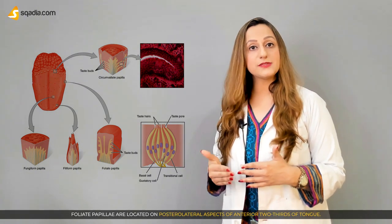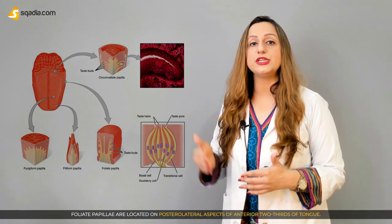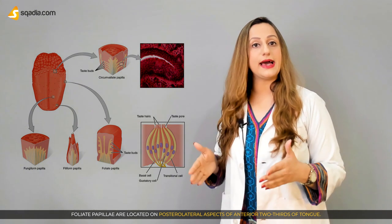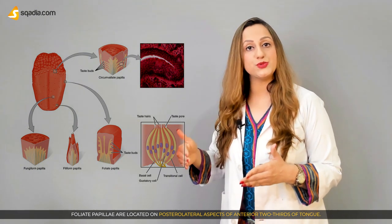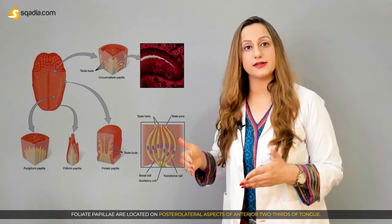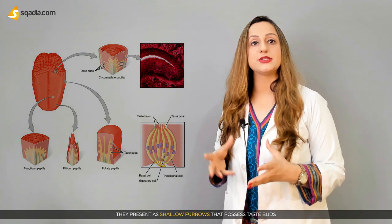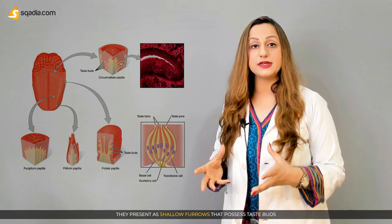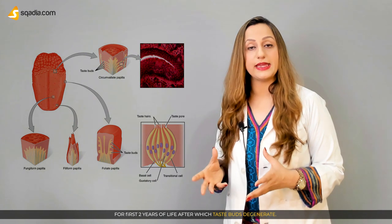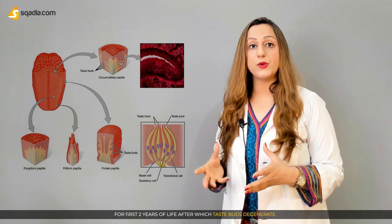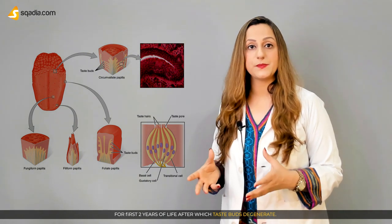Foliate papillae are located on the posterior lateral aspects of the anterior two-thirds of the tongue. They present as shallow furrows that possess taste buds for the first two years of life, after which the taste buds degenerate.